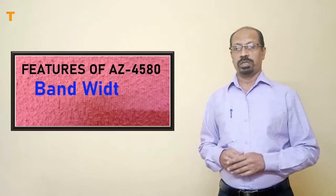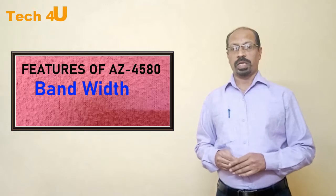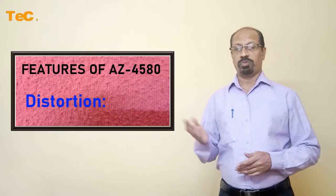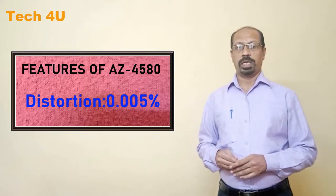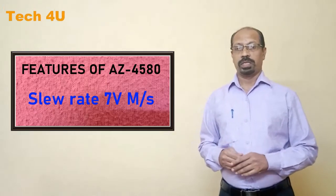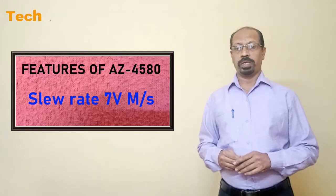Third one is wide gain bandwidth products that is 15 megahertz at 10 kilohertz typical. Next fourth one is low distortion that is 0.005 percent typical. Fifth one is slew rate that is 7 volt per microsecond typical.